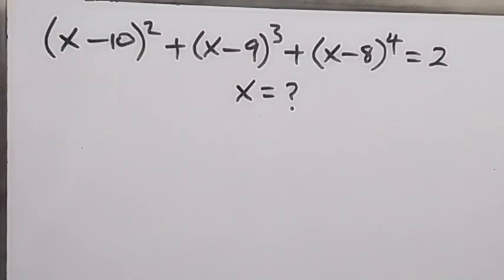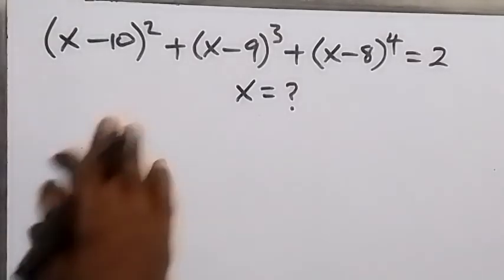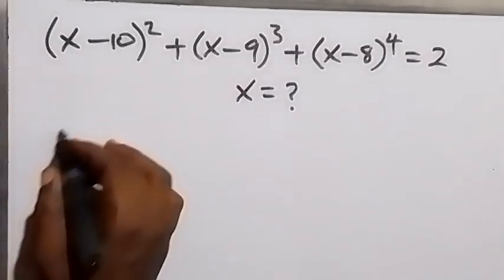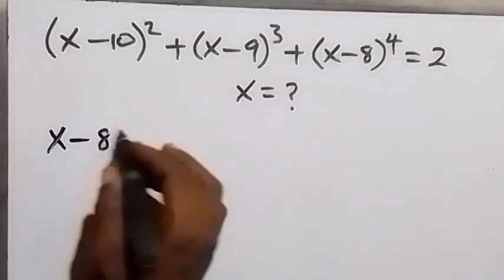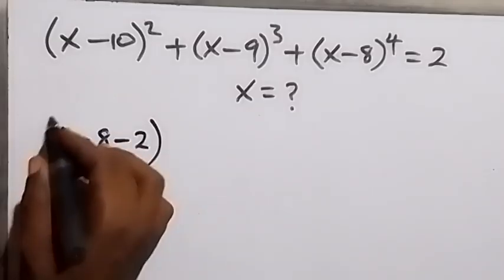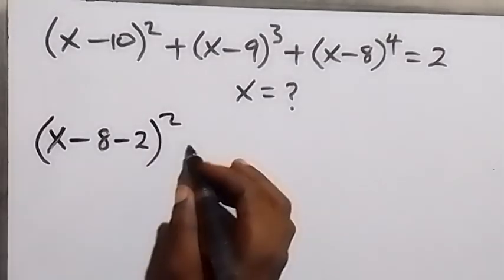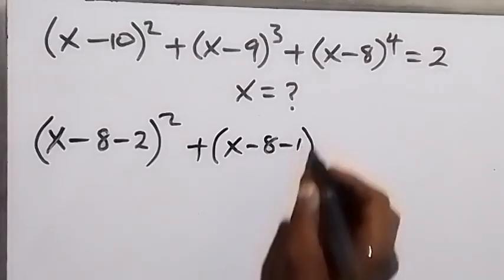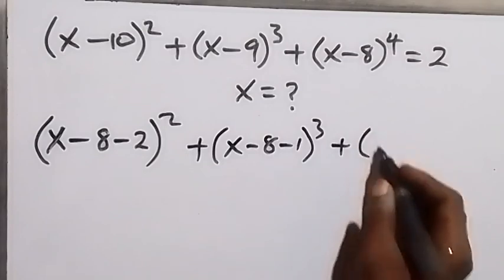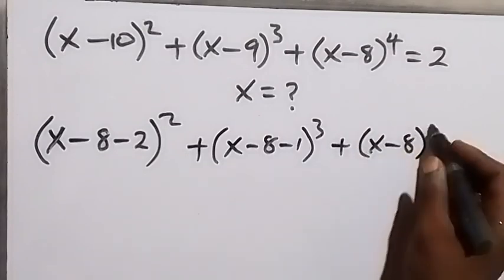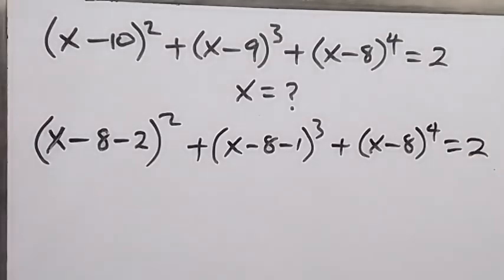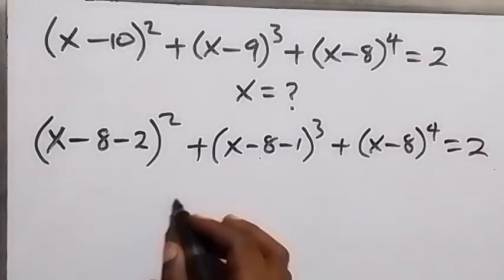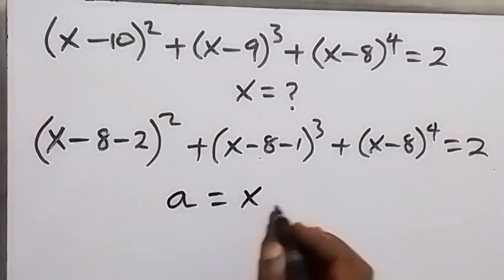Hello, you are welcome. How to find the value of x in this nice olympiad equation. From here, let's factor x minus 8 out. So we have it written as (x minus 8) minus 2 squared, plus (x minus 8) minus 1 cubed, plus (x minus 8) raised to power 4, equals 2. Let a equals x minus 8.